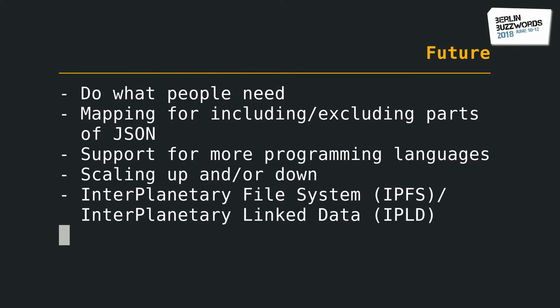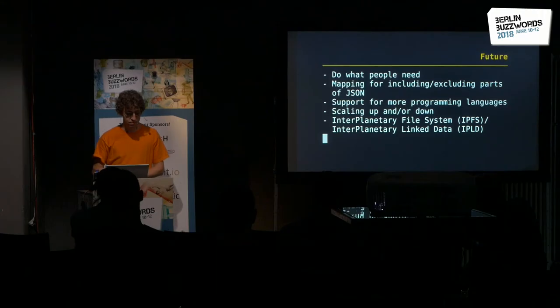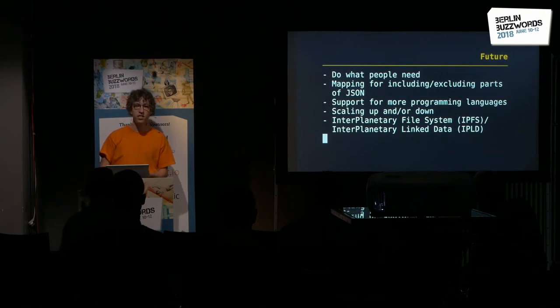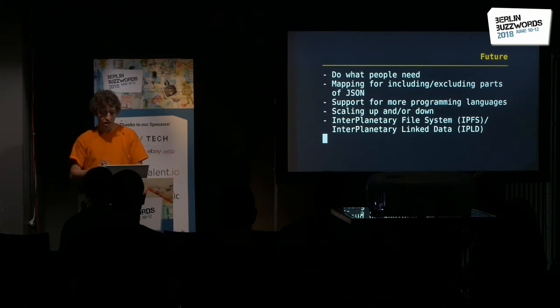The future plan — it's an open source project, I always forget to mention that. Everything I do is open source, so it's been on GitHub from the beginning. I plan to do mostly what people need. One thing is, since it does automatic indexing of everything, sometimes you want to exclude things — for example, if you have binary data in your JSON you don't want indexed as full text. Then, support for more programming languages: currently there's only a Node API, the Python API is not even published yet. I want to support more languages, perhaps even a Java binding.